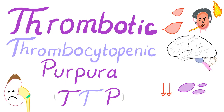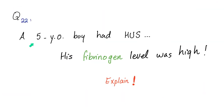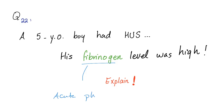Let's answer the question of the previous video. A five-year-old boy has hemolytic uremic syndrome. However, his fibrinogen level was high in the serum. How come? HUS is a problem with primary hemostasis. Fibrinogen should be normal because fibrinogen is related to secondary hemostasis, which is normal in cases of HUS. Why is fibrinogen high? Because fibrinogen is an acute phase reactant, and when you are an acute phase reactant, you will increase in the plasma if there is acute inflammation or something acutely going on.